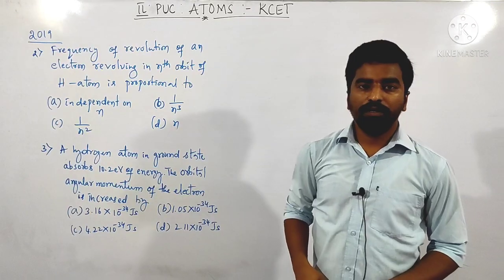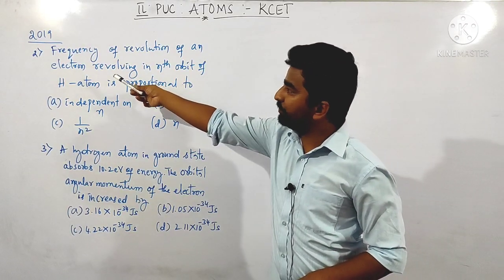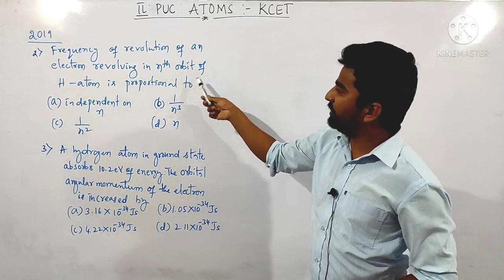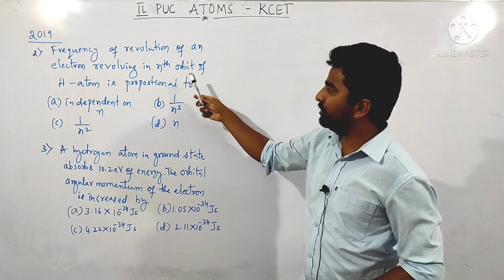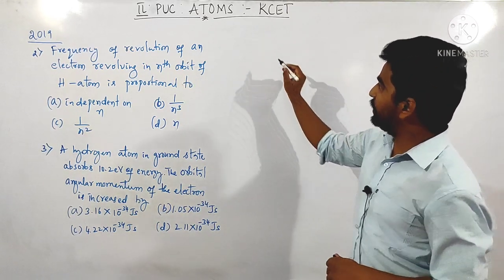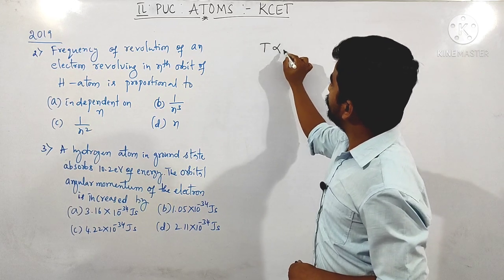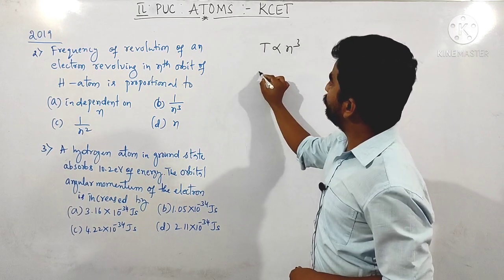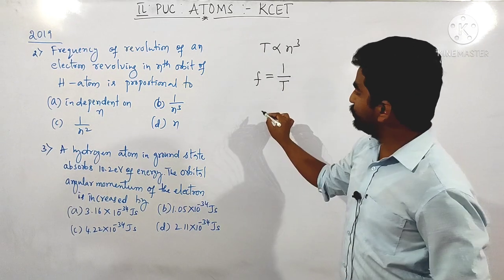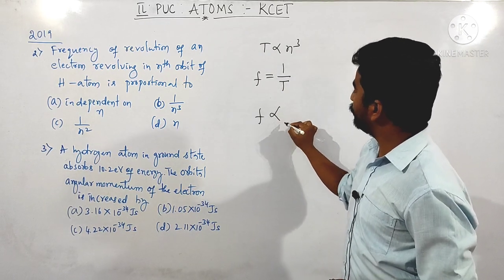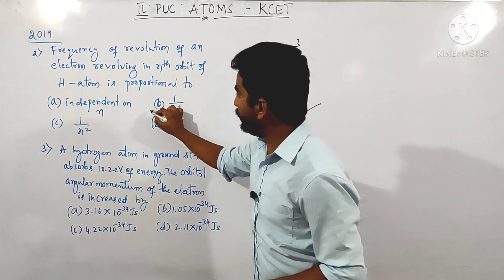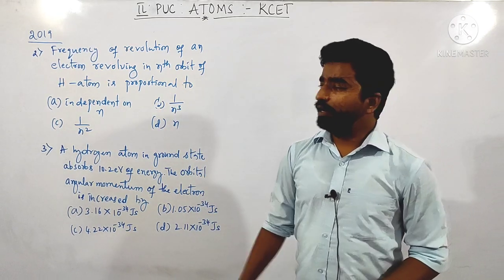Next question asked in 2019: the frequency of revolution of an electron revolving in the nth orbit of a hydrogen atom is proportional to what? We know that time period is proportional to n³, and frequency is inversely proportional to time period. So frequency is proportional to 1/n³. The answer is 1/n³.